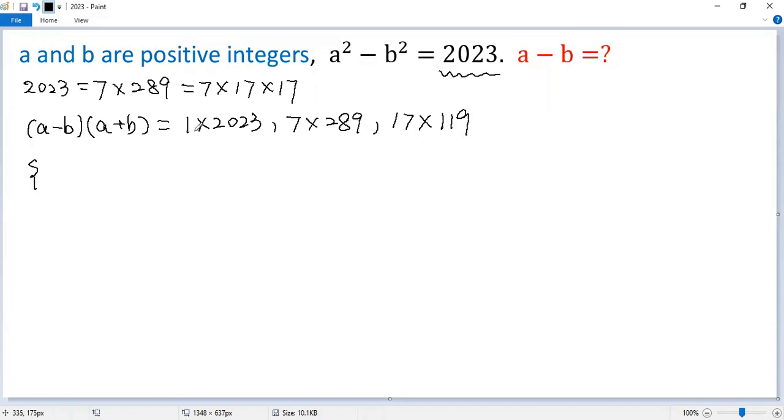The first one, a minus b equals 1, then a plus b equals 2023. Or a minus b equals 7, then a plus b equals 289. The last case, a minus b equals 17, then a plus b equals 119.